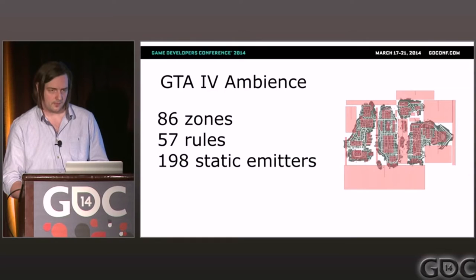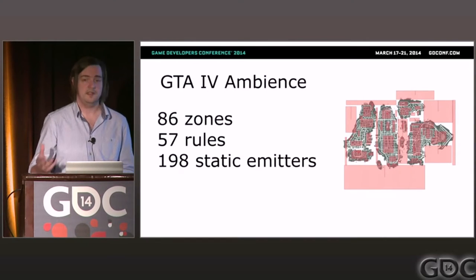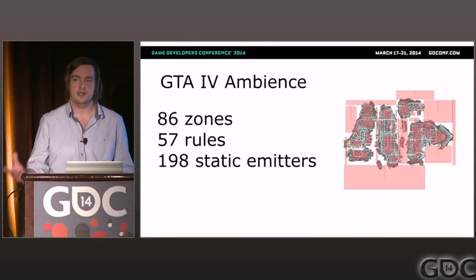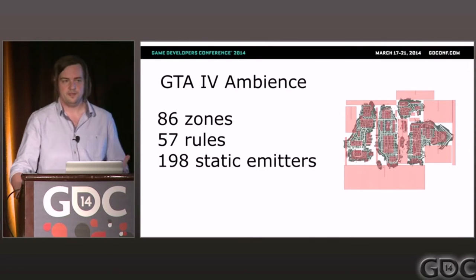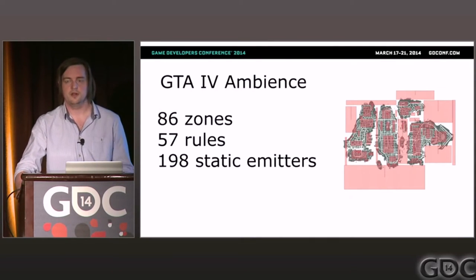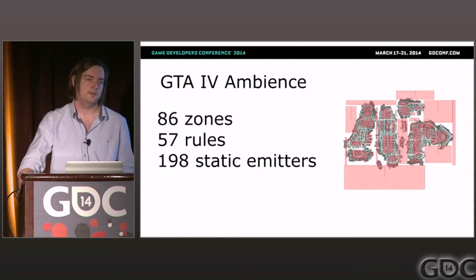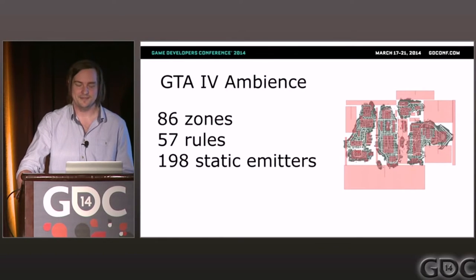Ideally everything should be around the corner, one block away, so you're never aware that it's not associated with something really happening at that moment. You might not have noticed, but in GTA4 we didn't have any dogs in our ambience track — you never hear a dog bark. If you've been to New York you obviously do hear dogs bark, but we didn't have dogs in the game, so it would have broken our world to include barking dogs. It was a very good day when we added dogs to GTA5.